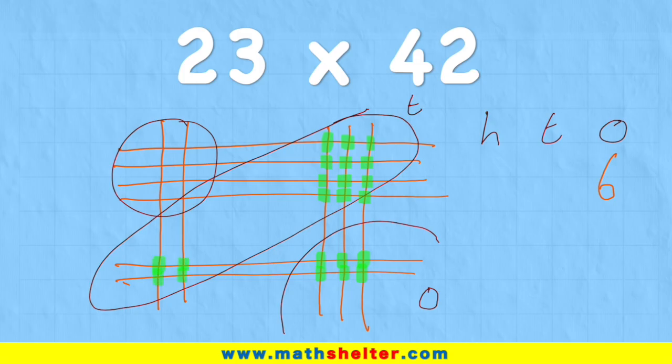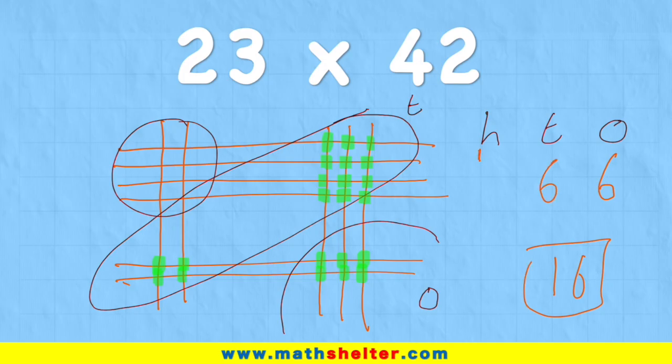Now because I have 16, and I only want to put one digit in the 10s column, I'm going to look at my 16 tens and realize that means I have 6 tens, but I have 1 hundred. So I'm going to put that 100 over here waiting for the 100s answer.